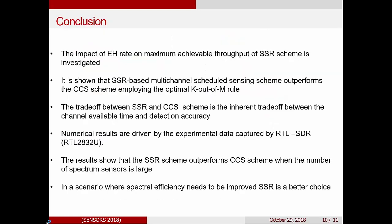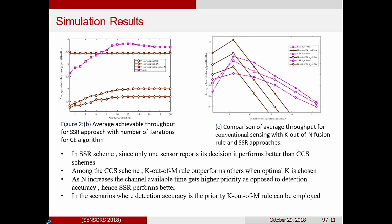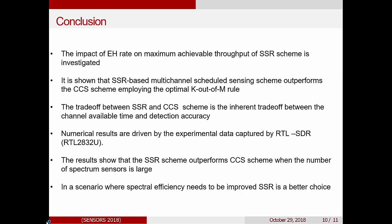So I would like to conclude saying that in this paper, we focus on the trade-off between the SSR and the conventional cooperative schemes. Although K out of M rule performs way better in terms of detection accuracy, in terms of the overall throughput, it's not able to compete whenever the number of sensors increases. And in those cases, we should switch to SSR.